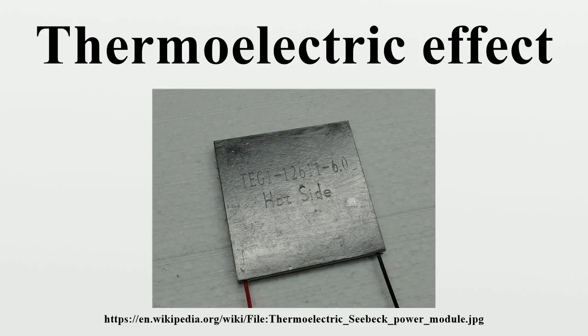Seebeck effect. The Seebeck effect is the conversion of heat directly into electricity at the junction of different types of wire. It is named for the Baltic German physicist Thomas Johann Seebeck.